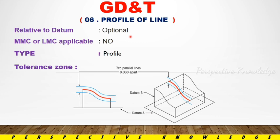Our CAT file is a step file. The CAT file will check the profile of line. The output of the product relates to MMC (Maximum Material Condition) and LMC (Least Material Condition) applicable conditions.